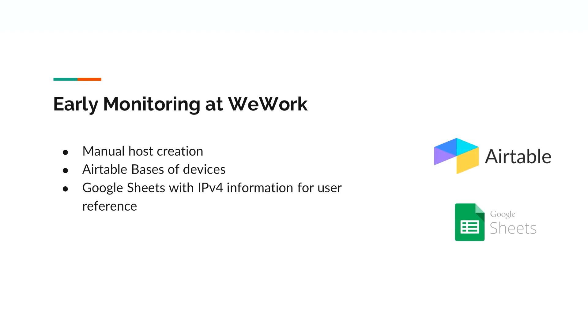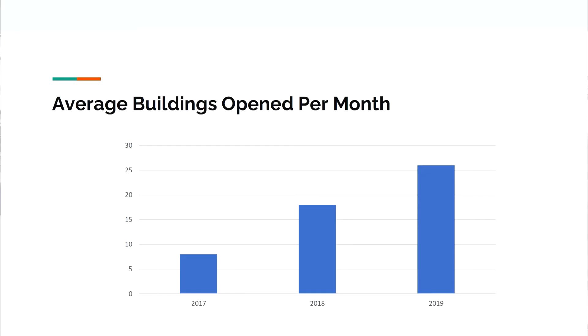Early monitoring at WeWork was built entirely with manual user input for everything. Airtable bases were generated by different departments, and many things were not shared across teams, even within the same department. Google Sheets were used for tracking building internal network information and updated manually. WeWork was opening buildings at a rate they call hypergrowth — an average of 8 buildings per month in 2017, 18 in 2018, and 26 in 2019. The manual entry of data was chaotic, as each department had its own devices to focus on, and several teams had their own priorities.